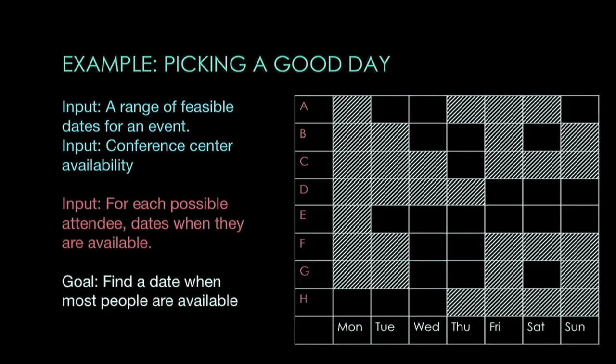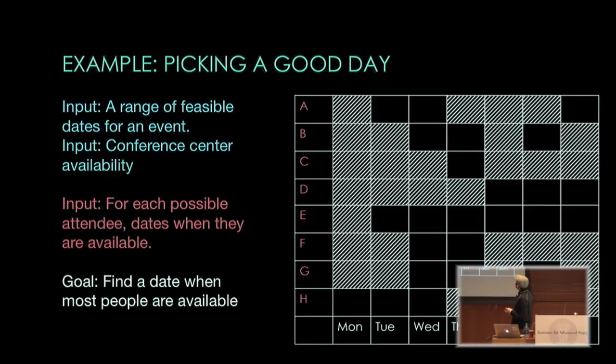In this toy example there are eight people. Person H can only make it on Monday, Tuesday, and Wednesday, and is busy on the remaining four days, and so on. The goal is to find a date when most people are available.